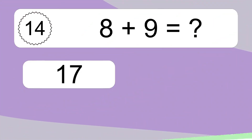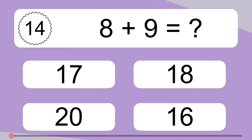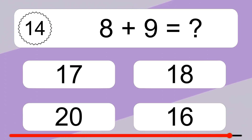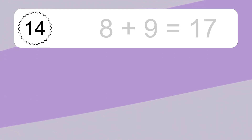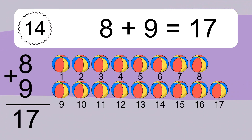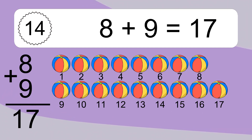8 plus 9 equals what? 15. Let's count it: 1, 2, 3, 4, 5, 6, 7, 8, 9, 10, 11, 12, 13, 14, 15, 16, 17.